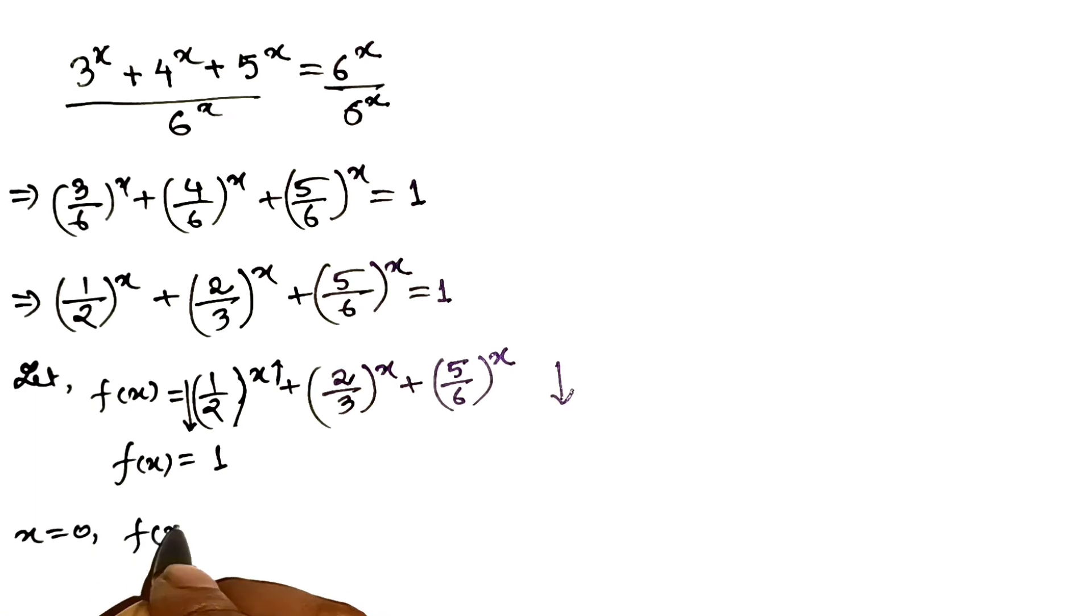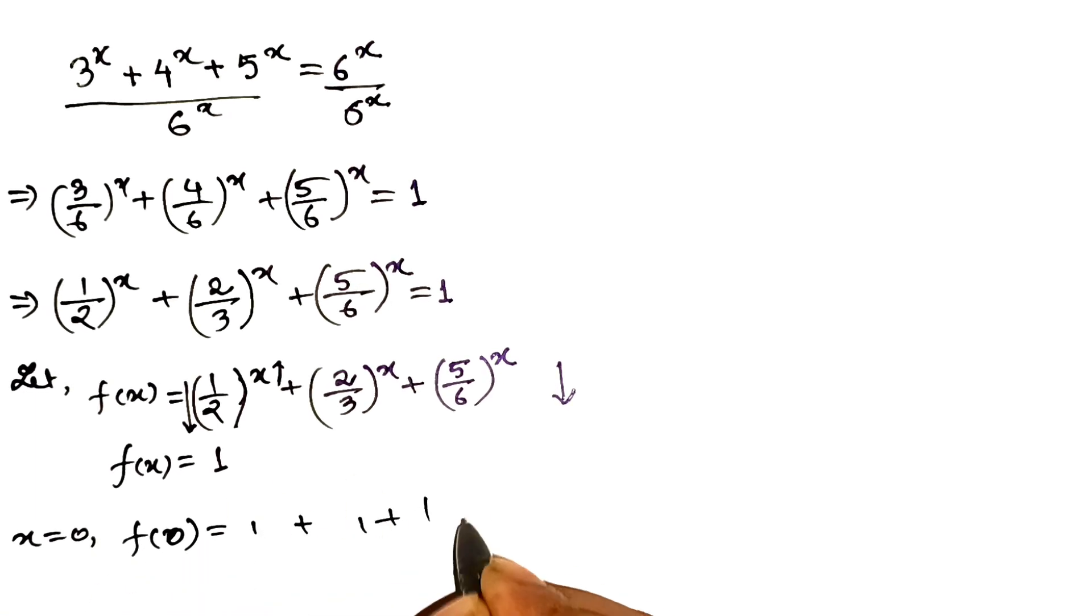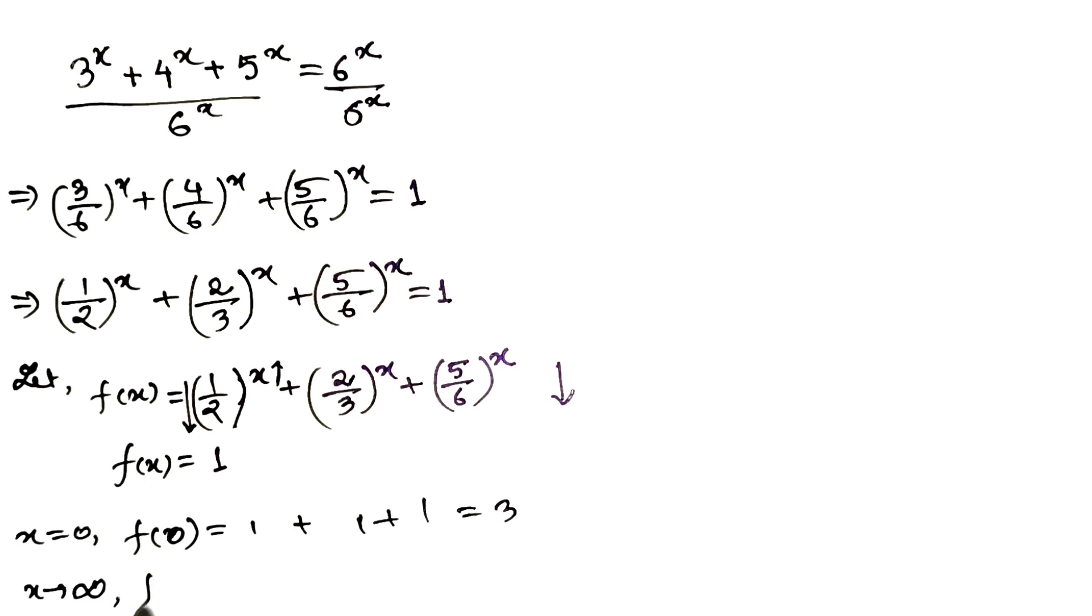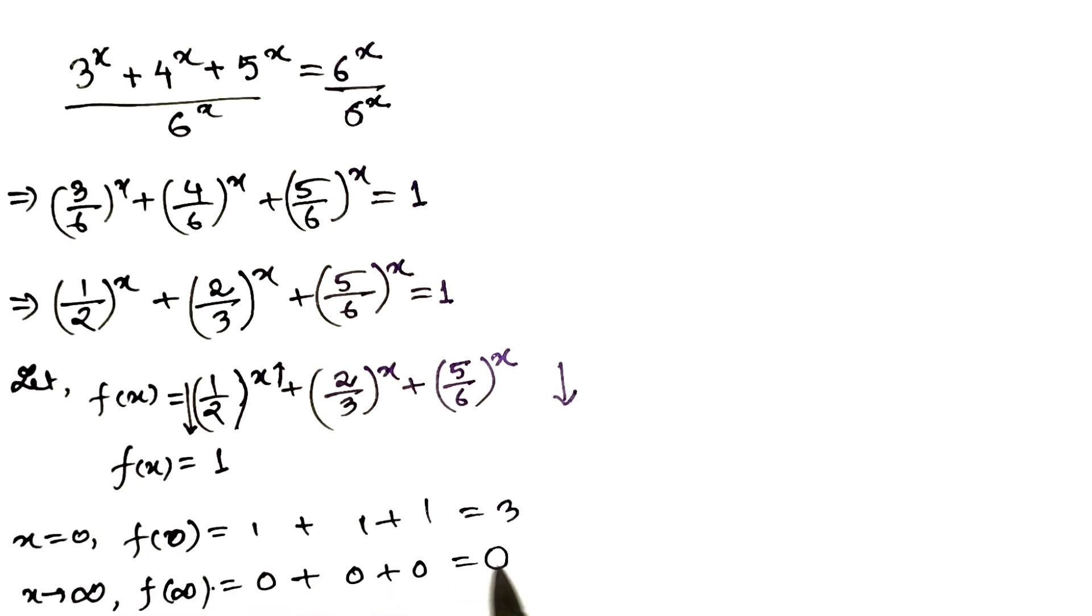At x equals 0, f at 0 is 1 plus 1 plus 1, which is 3, way above 1. As x goes off to infinity, each term goes to 0, so the sum goes to 0, way below 1.